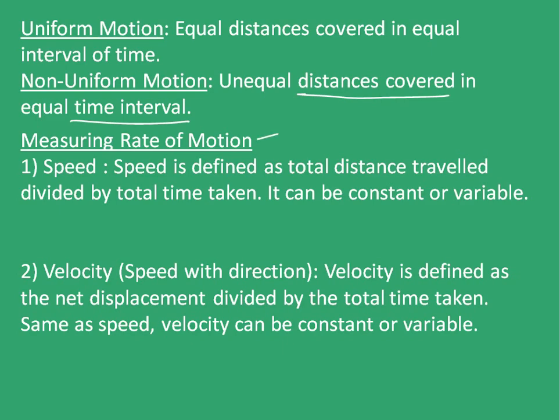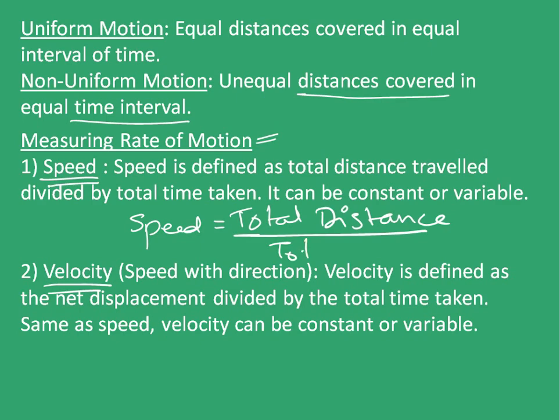Now, measuring rate of motion. To measure rate of motion, two quantities are used, namely speed and velocity. Speed is defined as the total distance traveled divided by total time taken. It can be constant or variable. So speed is total distance divided by total time.